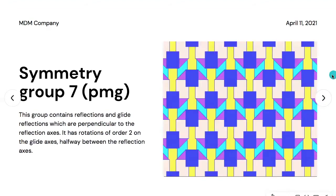Symmetry group seven is named PMG. This group contains reflections and glide reflections which are perpendicular to the reflection axis. It has rotations of order two on the glide axis, halfway between the reflection axes.